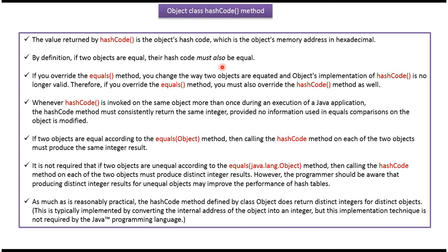By definition, if two objects are equal, their hashCode must also be equal. If you override the equals method, you change the way two objects are equated and Object's implementation of hashCode is no longer valid. Therefore, if you override the equals method, you must also override the hashCode method as well.